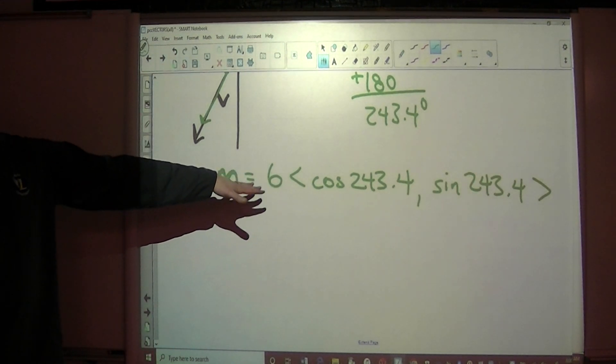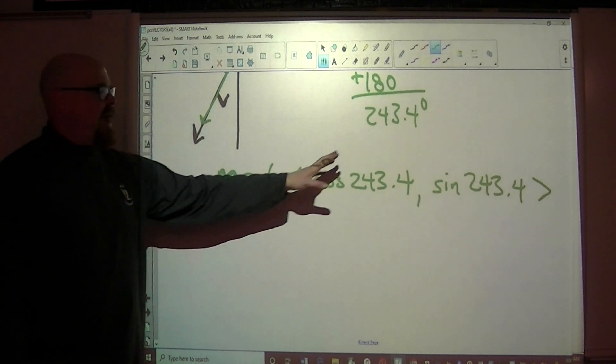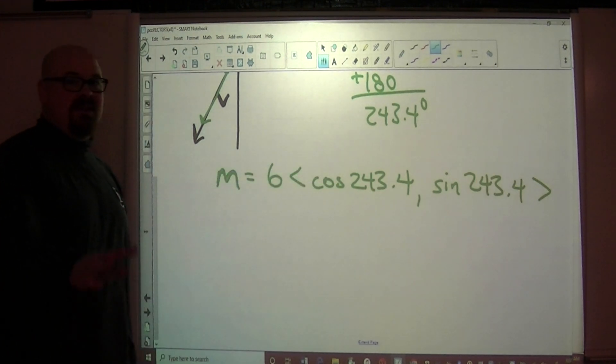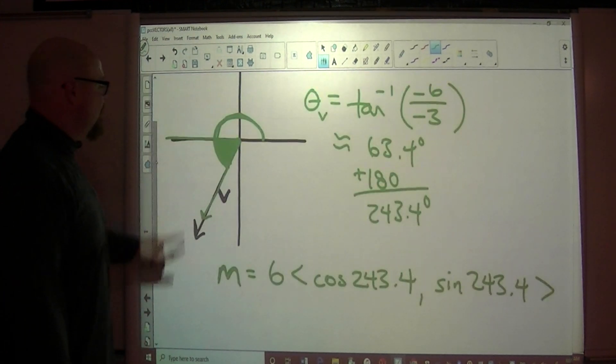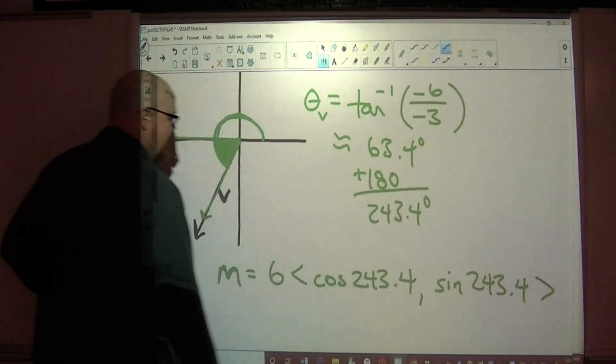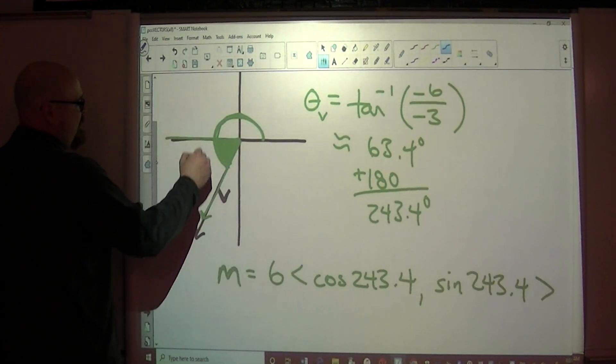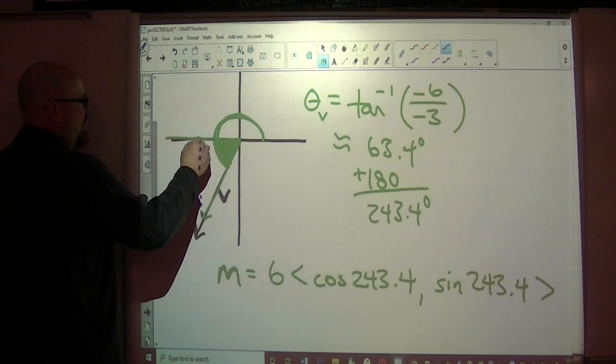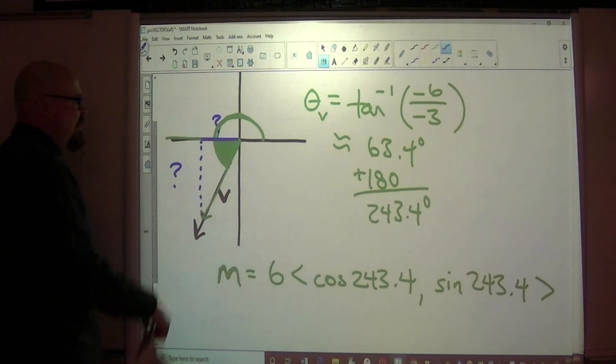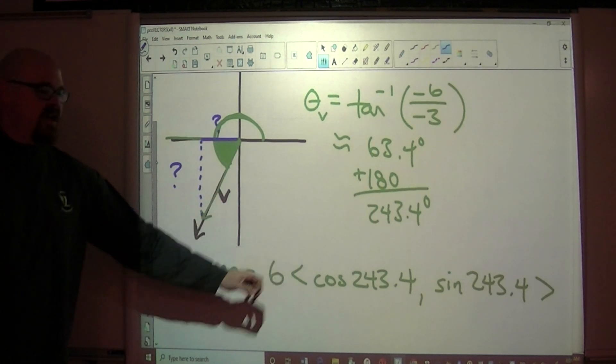This is perfectly fine for expressing component form when you know the magnitude and you know the direction angle. But let's say just for the sake of example, the one that we're doing right now, what if they wanted to know the actual run, what if they wanted to know the run and they wanted to know the rise?